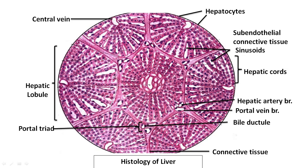The flow of blood in the liver is from the portal triads towards the central vein, so the flow of blood is centripetal. During its flow from the portal triad towards the central vein, we can see amidst the hepatic cords of cells there are spaces called hepatic sinusoids.